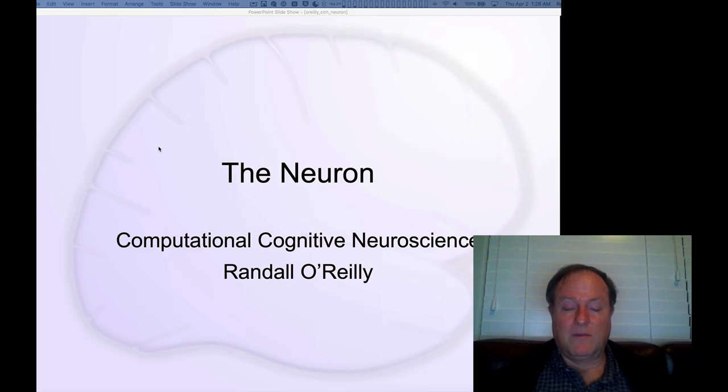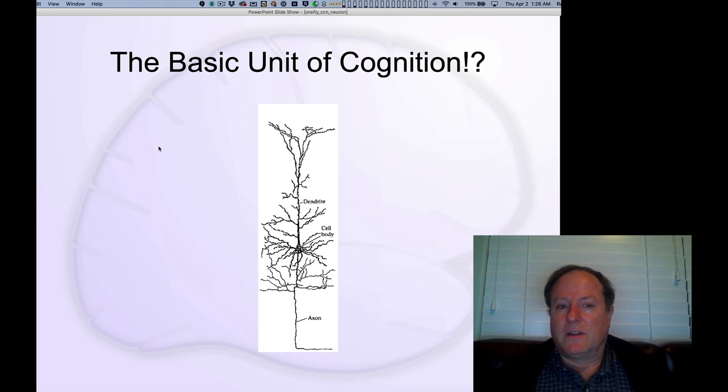Welcome to chapter two where we start talking about the neuron. The big question here is, is it possible, how is it possible, that the neuron serves as the basic unit of all of cognition?